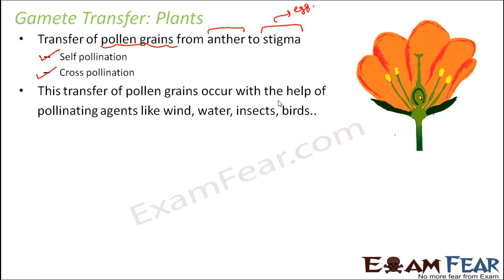This transfer of pollen grains to the stigma is facilitated by pollinating agents like wind, water, insects, and birds. Once the pollen reaches the stigma, the pollen tube grows and carries the male gamete down until it reaches the ovule and discharges the male gamete near the egg. That is how gamete transfer occurs in plants.